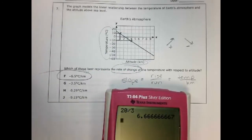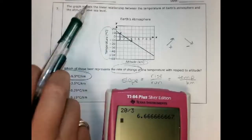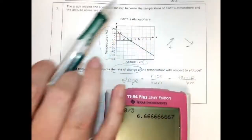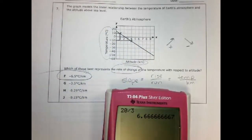That's all there is to it. Rise over run. It looked a lot harder. It had a bunch of words. It had stuff like atmosphere and altitude. Oh my goodness, all that stuff. It just came down to rise over run on my graph. That's all it was.